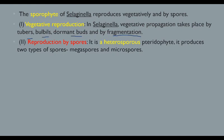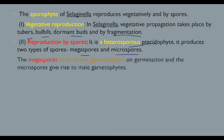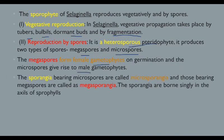Reproduction by spores: Selaginella is a heterosporous pteridophyte, so it produces two types of spores. The first is the megaspore and the other is the microspore. The sporangia that bear microspores are called microsporangia, and those that bear megaspores are called megasporangia.